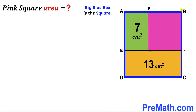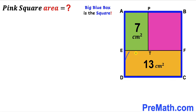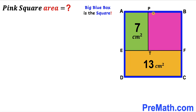Welcome to Pre-Math. In this video we have got this big blue square ABCD that consists of three parts. Part one is the green shaded rectangle, part two is the orange shaded rectangle, and finally part three is the pink shaded square, as you can see in the given diagram.